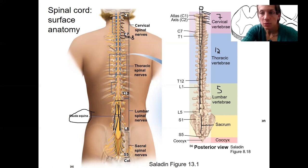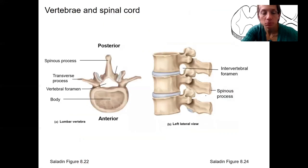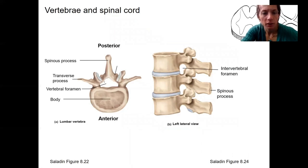Let's look at this with a different image. Here are your vertebrae. Where is the spinal cord on these images? Well, in this image, it's right here. The spinal cord is inside the vertebral foramen. You'll see me draw this butterfly-shaped tissue when I get to the anatomy of the spinal cord.